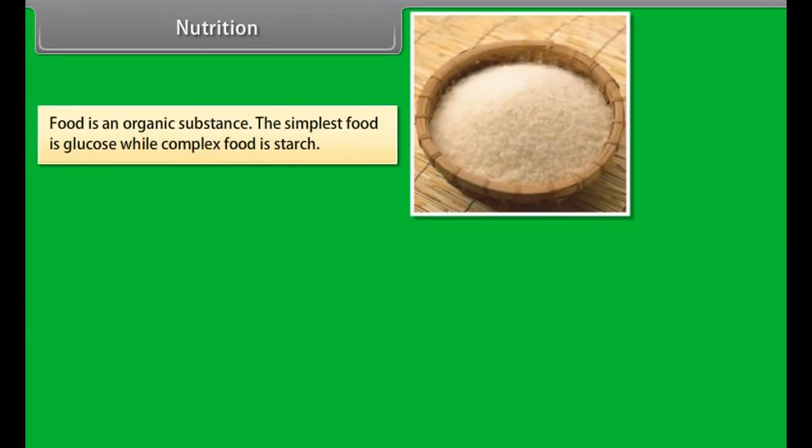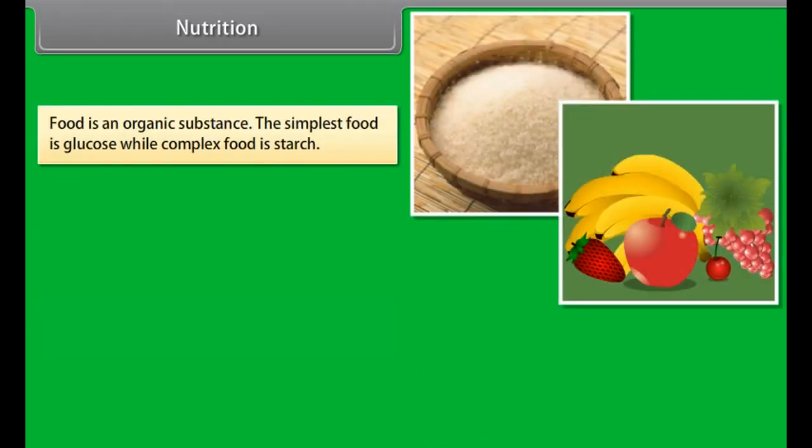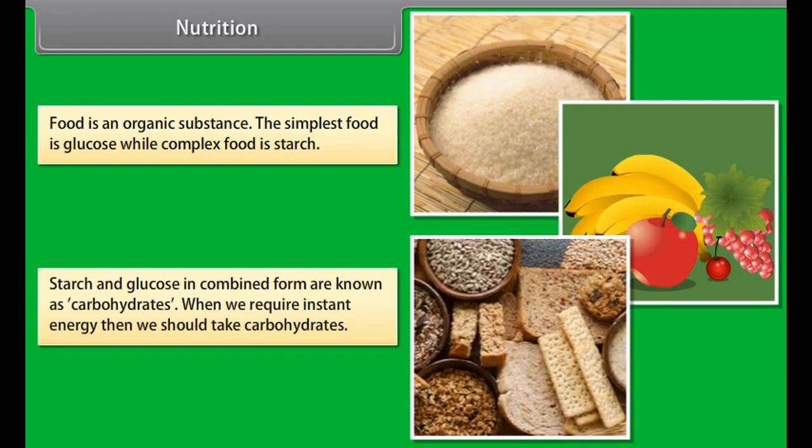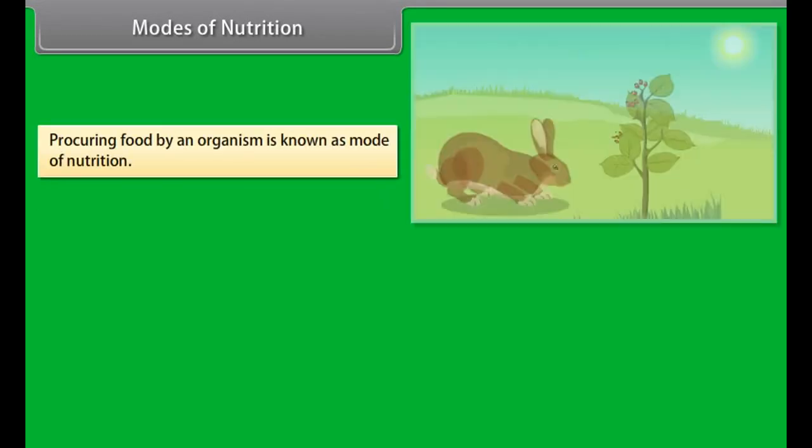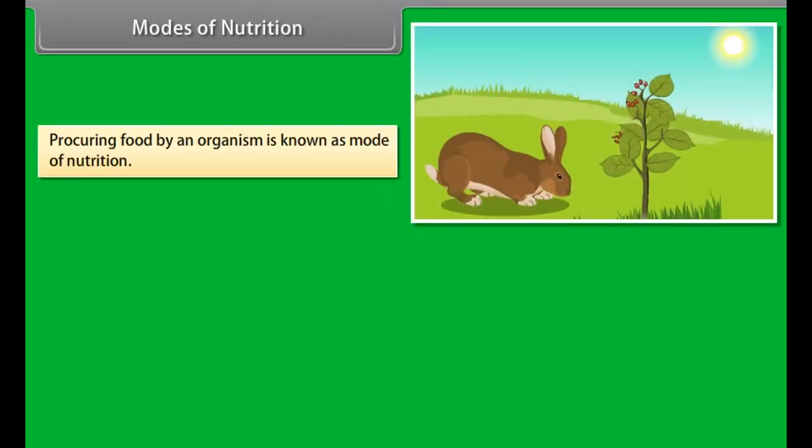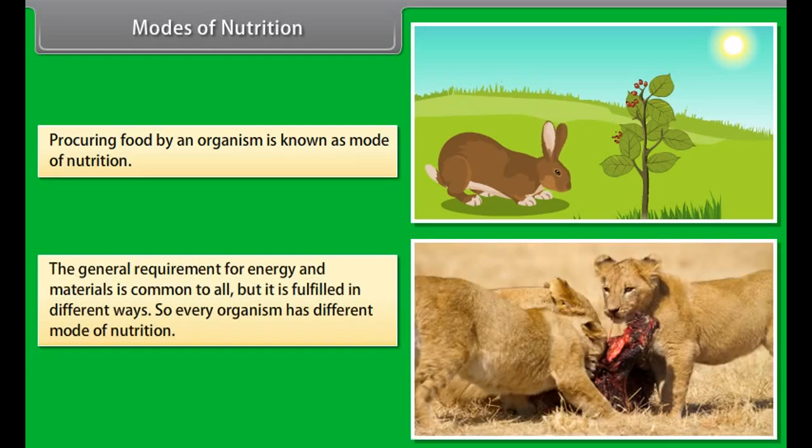Food is an organic substance. The simplest food is glucose while complex food is starch. Starch and glucose in combined form are known as carbohydrates. When we require instant energy then we should take carbohydrates. In addition to carbohydrates, food should also contain fats, protein, mineral salts, vitamins and water because they all are essential for normal growth and development of an organism. Procuring food by an organism is known as mode of nutrition.